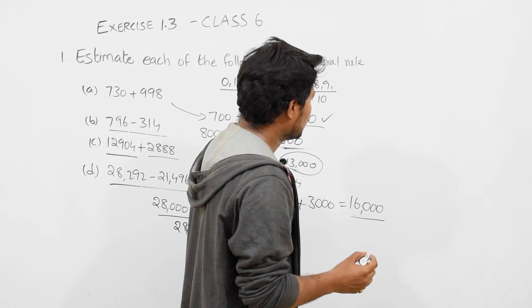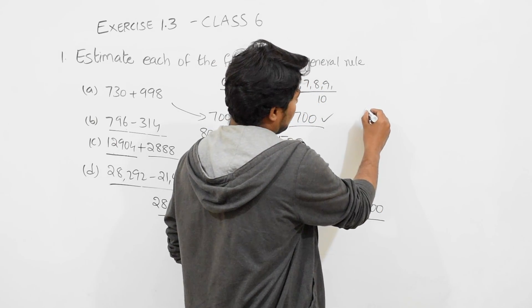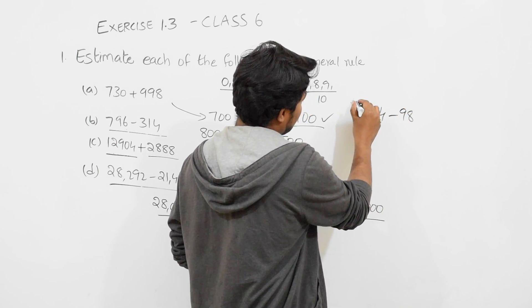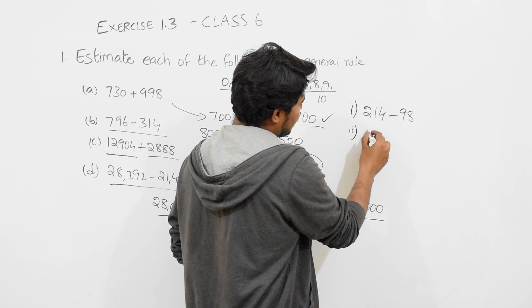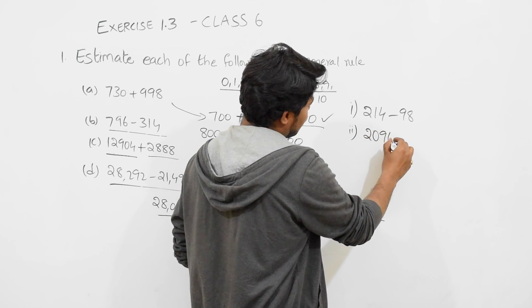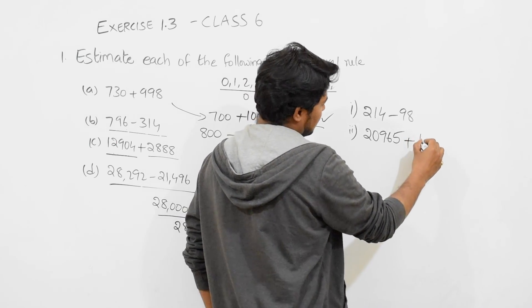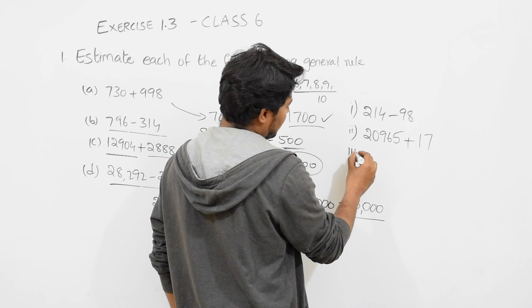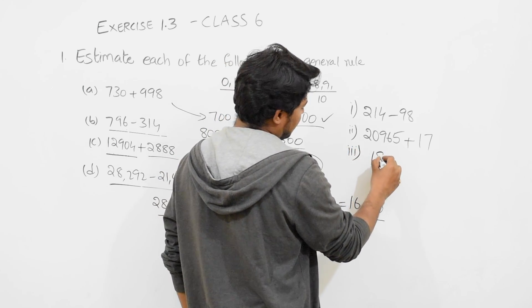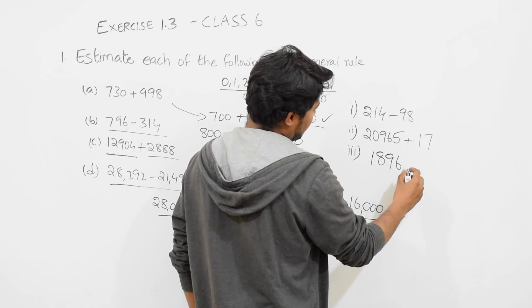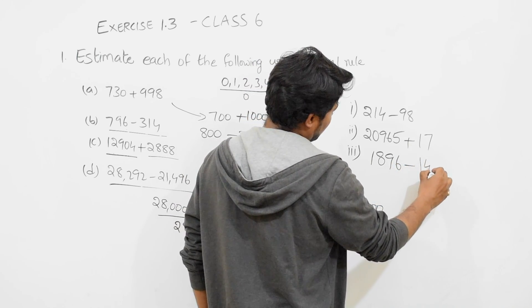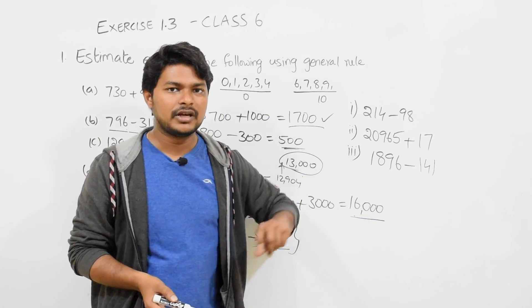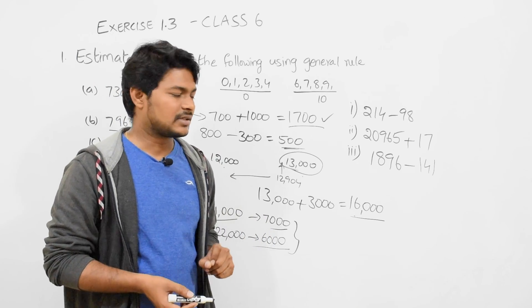Now I will give you homework. You have to write this in the comment section. First: 214 minus 98. Second: 20965 plus 17. Third: 1896 minus 141. You try to estimate this and write the answer in the comment section. I will be waiting to see how many correct answers.